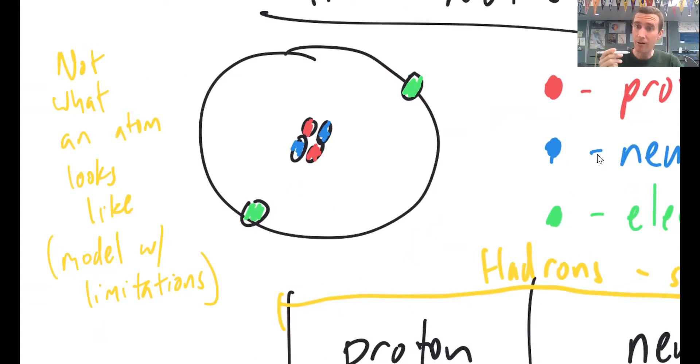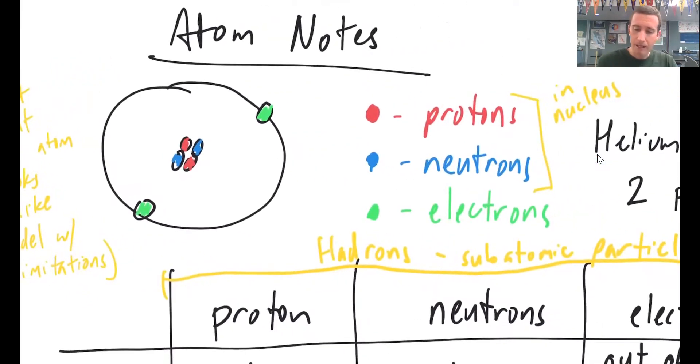This is a model that has limitations. So this model is really good for telling us what the parts are that make up an atom and roughly where they're located. So our code here is the red things are protons, the blue things would be neutrons, and both of those are located clustered together in the center. That's the area that we call the nucleus. And then outside of the center area are electrons.